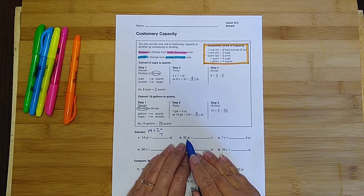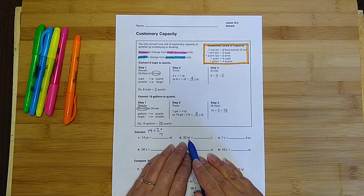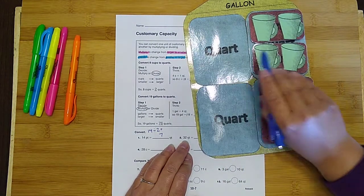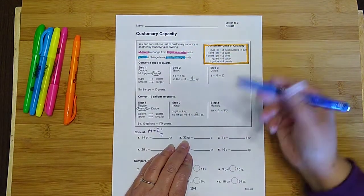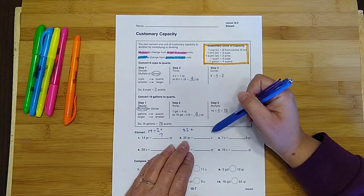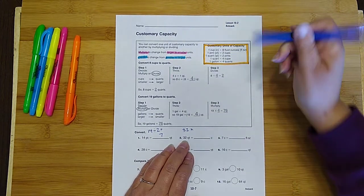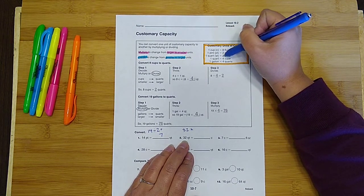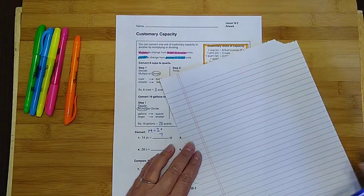All right, next one. 32 quarts equals blank cups. So we've got, we're going from quarts to cups, and a quart is bigger than a cup, so we're going larger to smaller, which means we want to multiply. 32 times, and I've got to figure out what number to multiply by, and I'm going to look at this chart. So I need the line that says quarts and cups. So one quart is equal to four cups. So my number is four. 32 times 4. I'm going to get a scratch piece of paper.